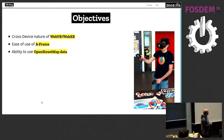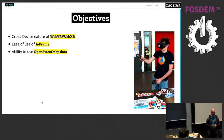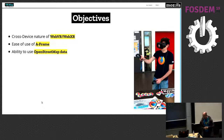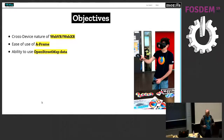The objectives of this talk are the cross-device nature of the technology WebVR or WebXR. Another objective is to show you the ease of use of the A-Frame framework that Mozilla has been developing for those technologies — for WebVR and WebXR. And the third is using OpenStreetMap data and the ability to use OpenStreetMap data for things like this.